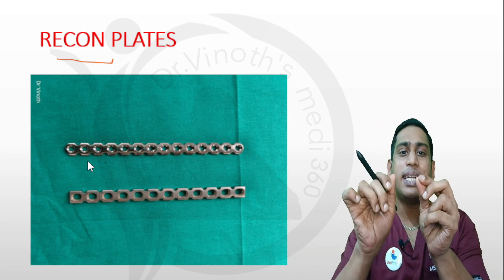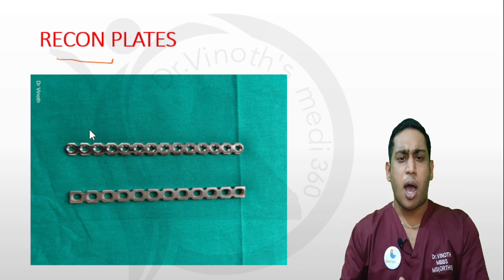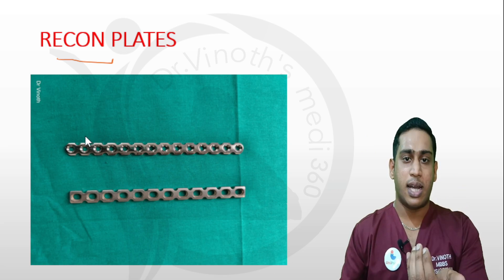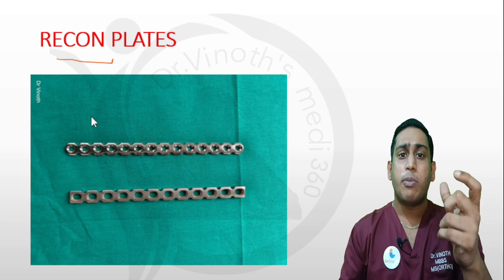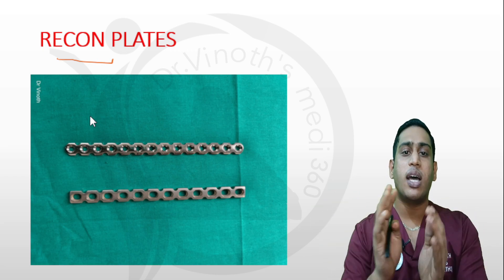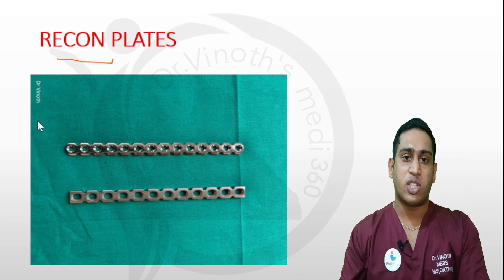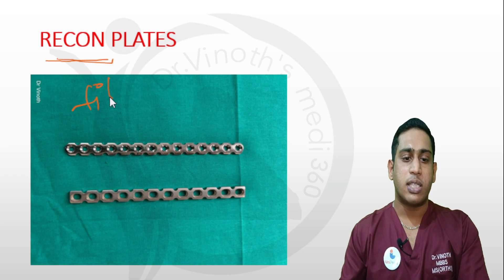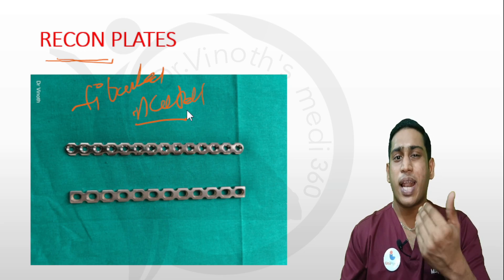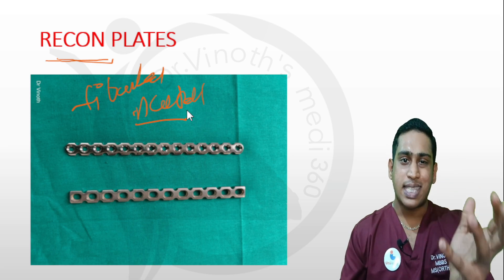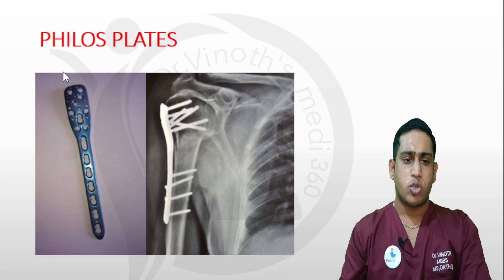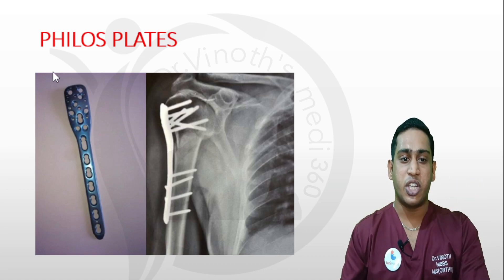Reconstruction plates — also called raccoon plates — are low-profile plates that can be bent in any direction. They can be applied for shaft fractures of the ulna and radius, distal fibular fractures, and are available in multiple shapes for contouring onto different types of pelvic and acetabular fractures. When you come across reconstruction plates, remember fibular fractures, acetabulum, and pelvic fractures. There are also specialized reconstruction plates specifically for acetabular and pelvic fractures.